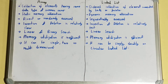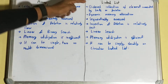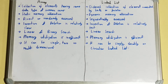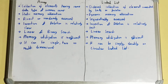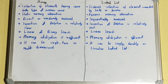In this video we'll look at the difference between an array and a linked list. An array is a collection of elements having the same data type and a common name. A linked list is an ordered collection of elements connected by links or pointers, where different elements are connected together with the help of links or pointers.